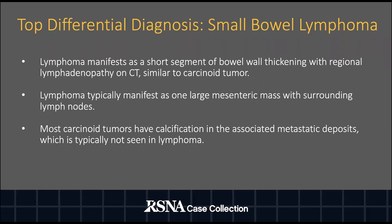Similar to carcinoid tumors, lymphoma manifests as a short segment of bowel wall thickening with regional lymphadenopathy on CT. However, lymphoma typically manifests as one large mesenteric mass with surrounding lymph nodes. Additionally, most carcinoid tumors have calcification in the associated metastatic deposits, which is typically not seen in lymphoma.